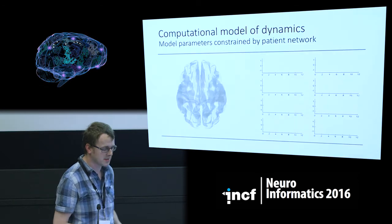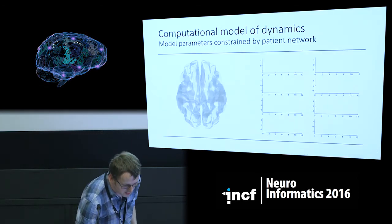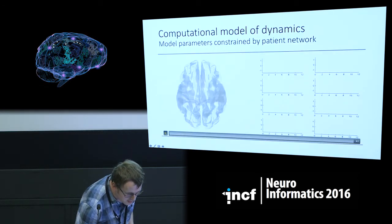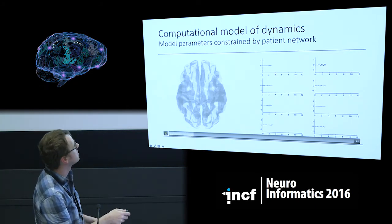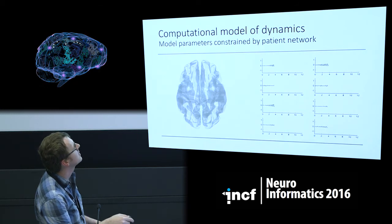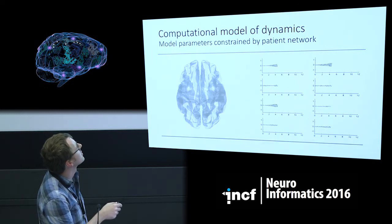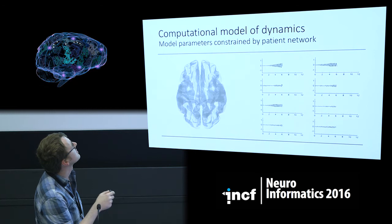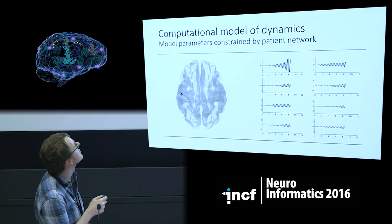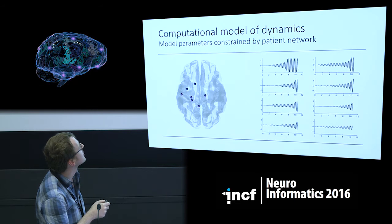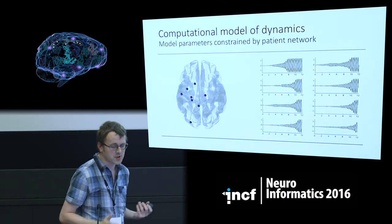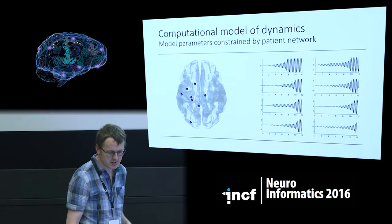We can simulate this model to see if it gives something reasonable-looking for a seizure. Plotting a time series for a subset of network nodes overlaid on the brain, when one goes into a seizure state it pops up on the brain. The first one is left temporal, then the right thalamus pops up, and others as the seizure spreads quickly throughout the brain. So we can simulate the seizure spreading in patients.